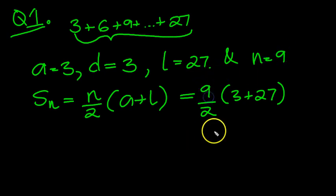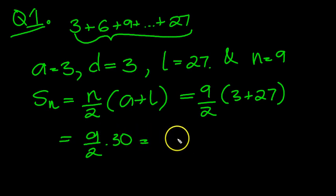So there are 9 terms in the sequence. There's the answer then. It's 9 over 2. 27 plus 3 is 30, so 30 over 2 is 15. 9 times 15: 9 times 10 is 90, 9 times 5 is 45. 90 and 45 is 135.